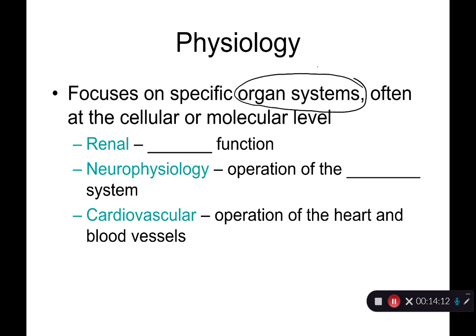There is a physiology for every organ system covered this semester and in AP2. Renal physiology looks at kidney function — how kidneys filter blood and remove wastes and toxins from the bloodstream. Neurophysiology looks at how the nervous system works: how neurons fire and send signals. Cardiovascular physiology covers the heart and blood vessels. We'll cover neurophysiology this semester, but renal and cardiovascular physiology won't be covered until Anatomy 2.